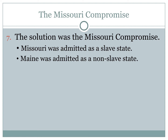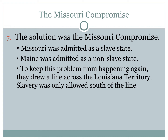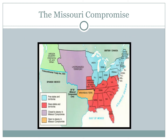Congress didn't want to have to deal with this issue again, so they came up with a more permanent solution: drawing a line across the Louisiana territory. This 36°30' line, or the Missouri Compromise line, meant slavery was only allowed south of it. Missouri came in as a slave state and Maine as a free state. The Arkansas territory — the orange portion of the map — was open to slavery, and any states formed there could come in as slave states. The purple area, the rest of the Louisiana Purchase, would produce free states.